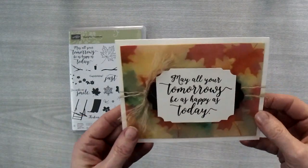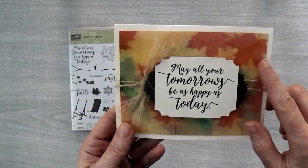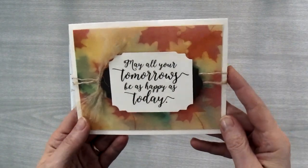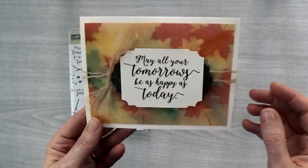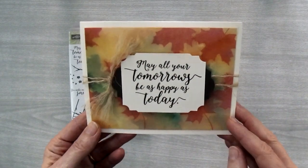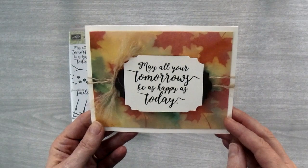This card is created by stamping the bold leaf and then spritzing it all over with water to create this watercolor effect. I'm going to show you my tips and tricks for creating this perfectly blended background. So let's get started and I'll show you how to make it.